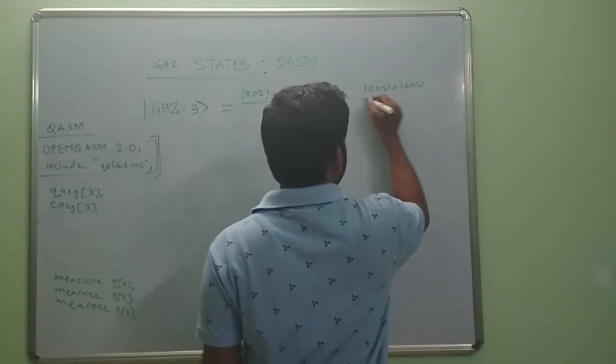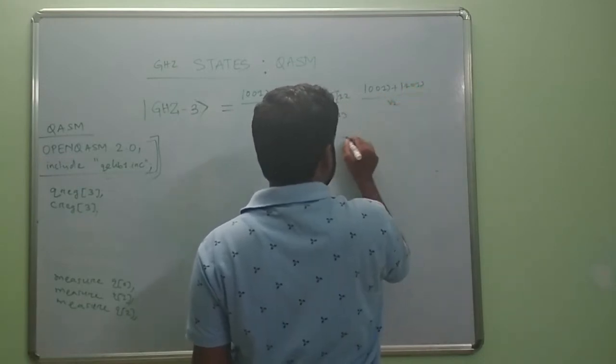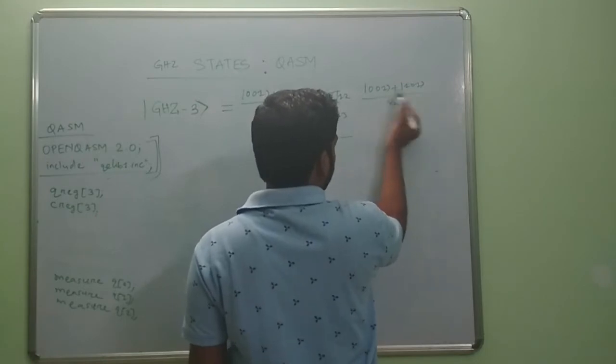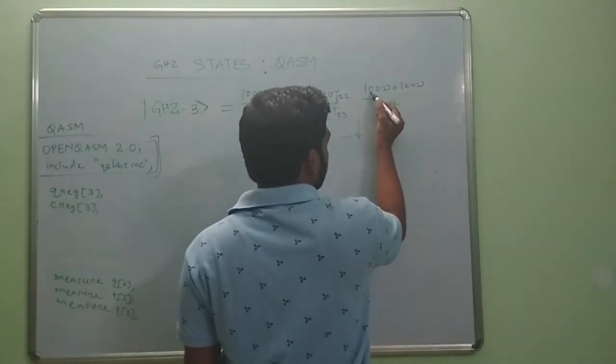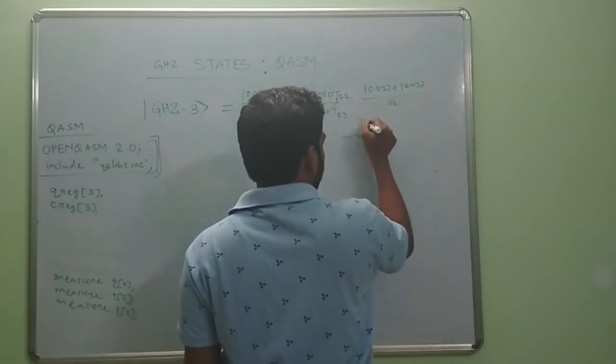Now you can see the last two qubits are 01, so we can take that as common. Then we have 0 plus 1 by root 2 on the first qubit, so we can put a Hadamard gate on the first qubit.